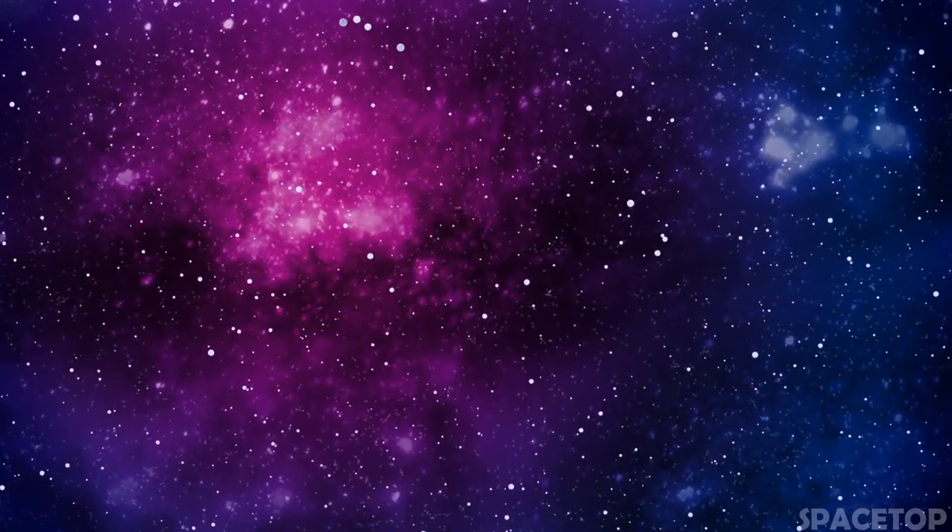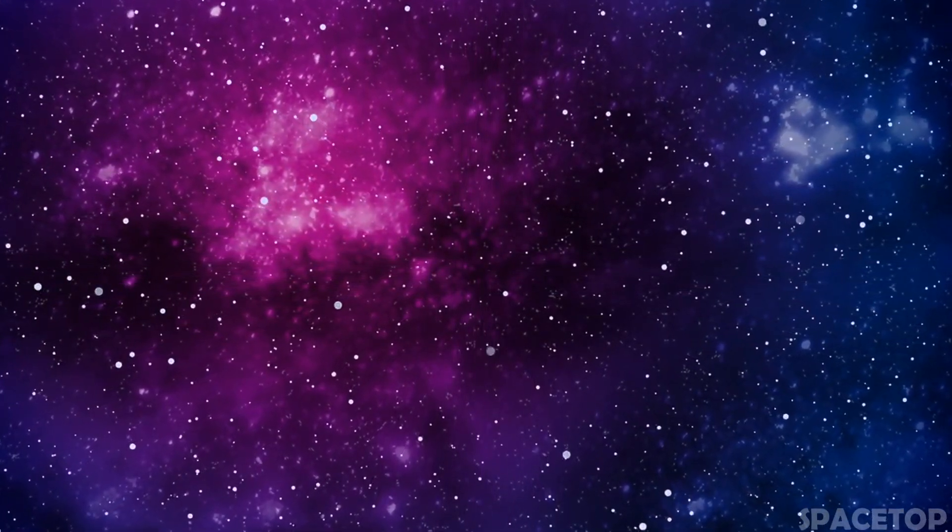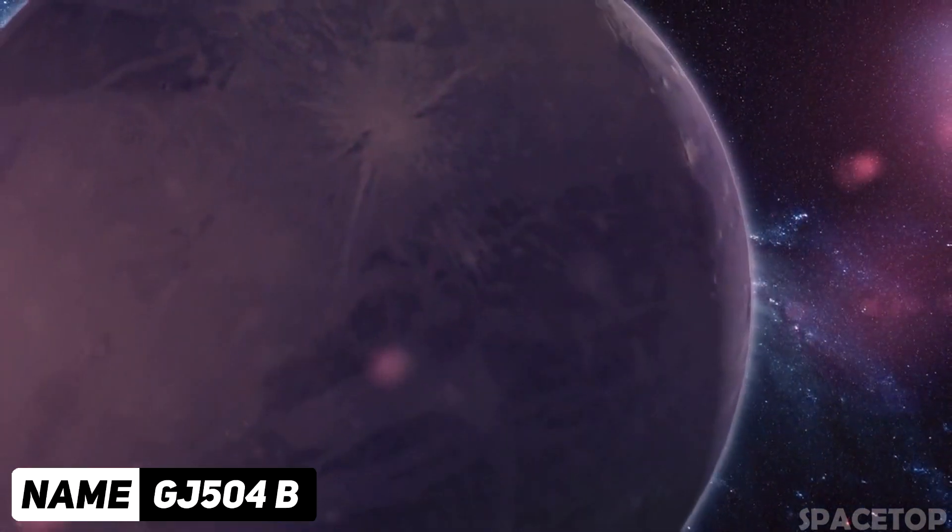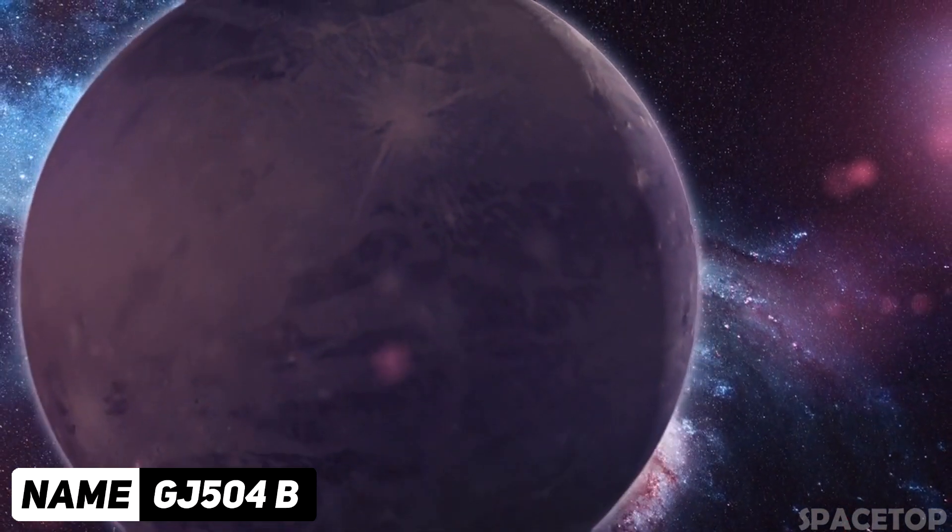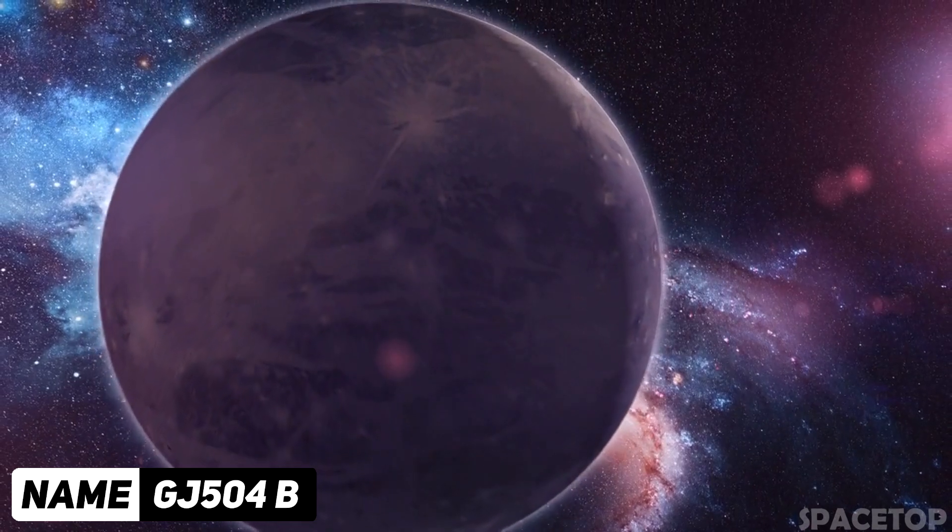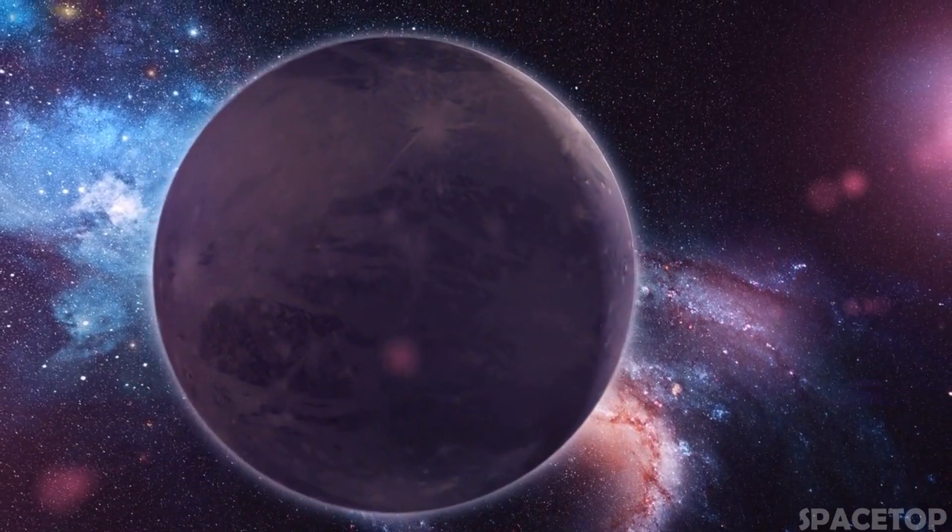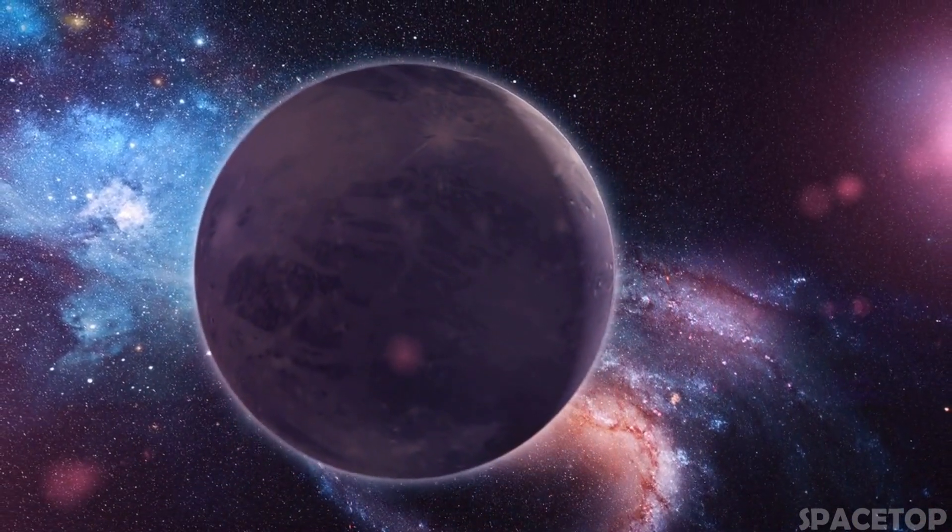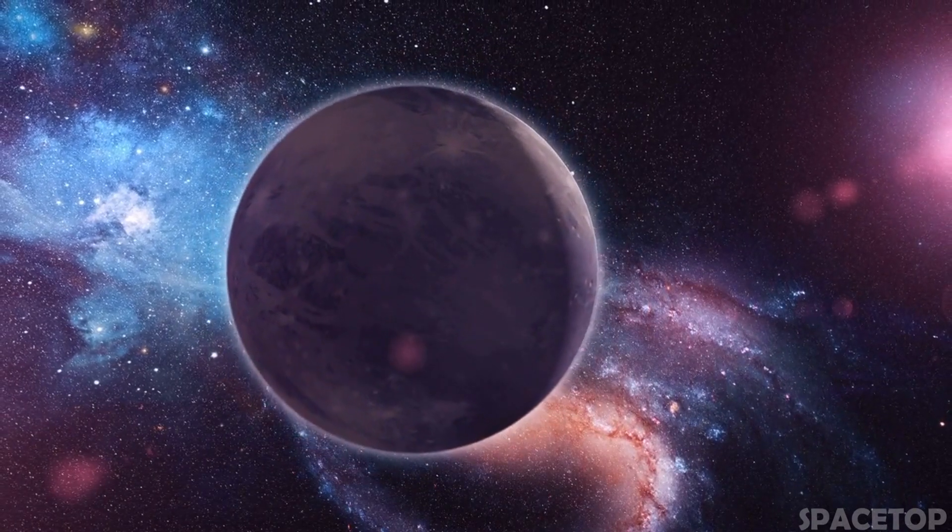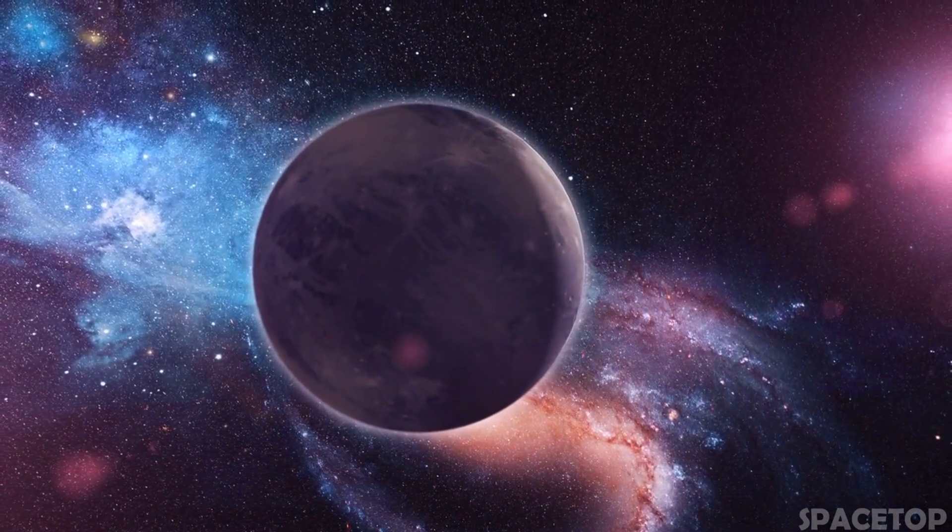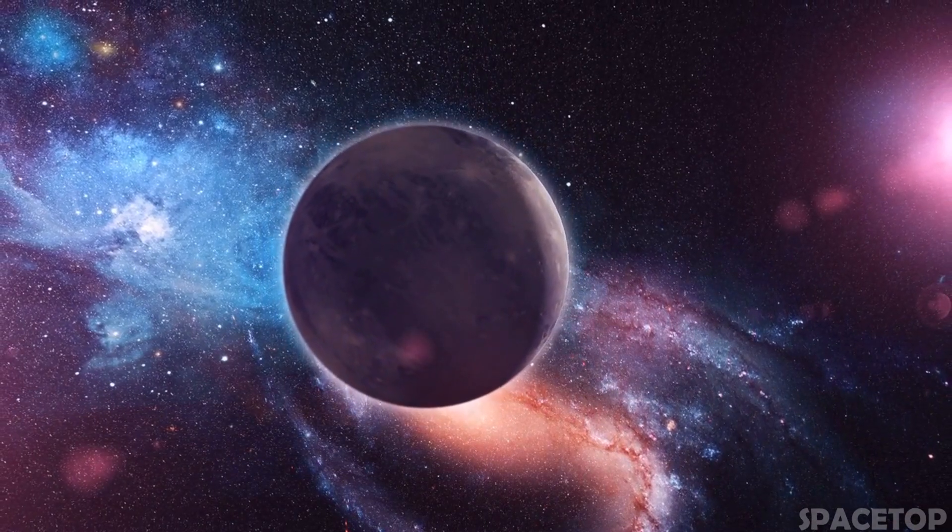Another exoplanet located 57 light-years from Earth. The planet, WGJ504b, is four times more massive than Jupiter, but has about the same size. The strangest thing about this planet is that it is pink, a rather unusual color for a planet. So, how did it get its color?